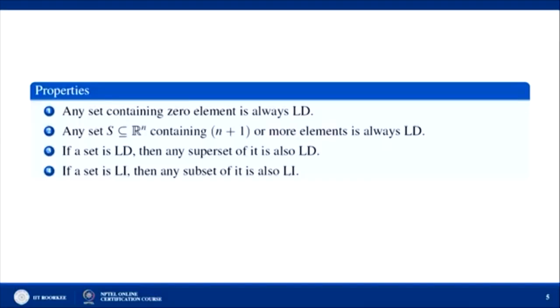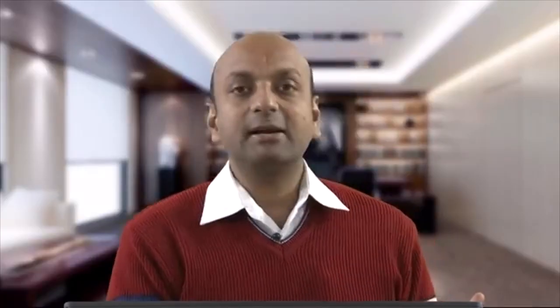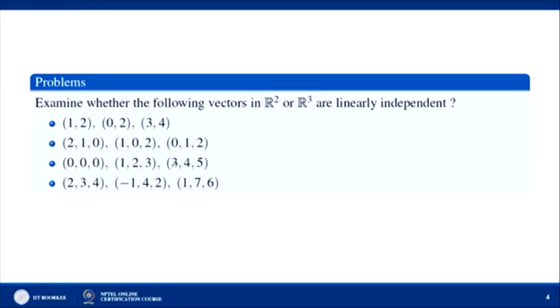Now let us see some properties of linearly dependent and linearly independent sets. The first property is: any set containing the zero element is always LD. If a set contains the zero vector, that zero vector can always be expressed as a linear combination of the remaining vectors with all scalar coefficients equal to zero, so the set is clearly LD — as we saw in the third example.